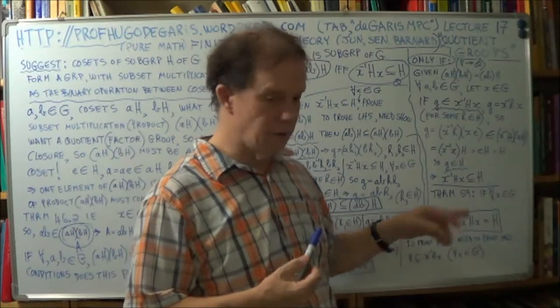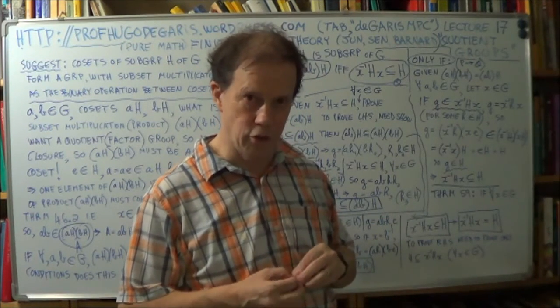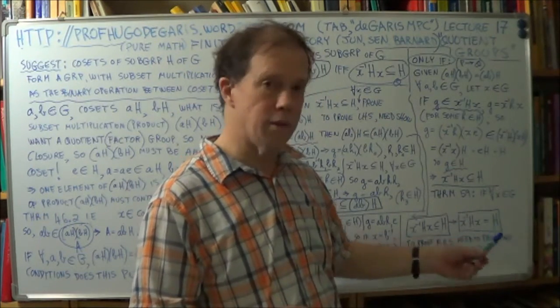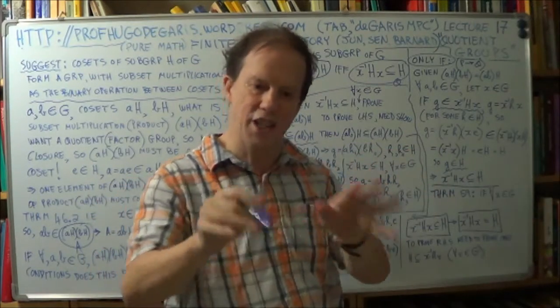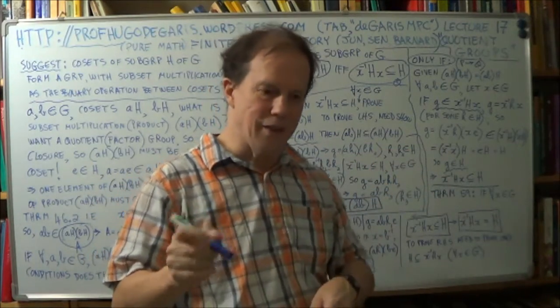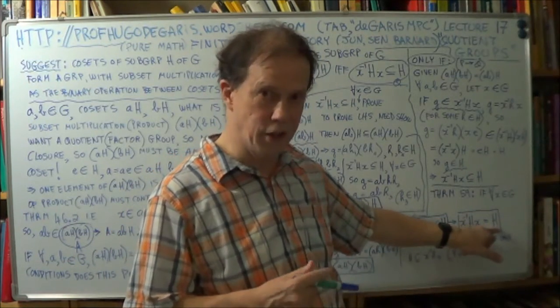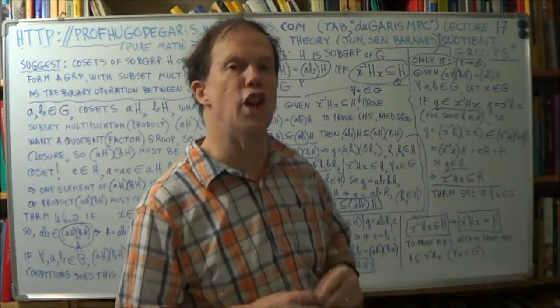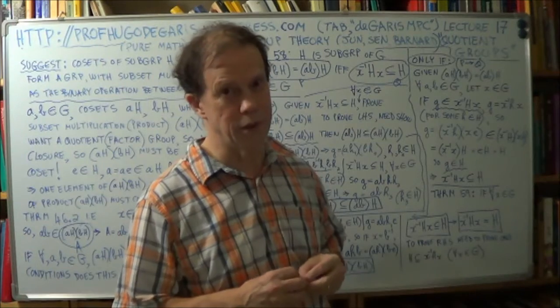So a condition to have a quotient group, a factor group, is that your subgroup H, you know, from which you generate all the cosets, you know, AH, BH, A squared H, blah blah blah, you know, all the cosets, depending on your H. But that H has to be normal. It has to be a normal subgroup. So really important.